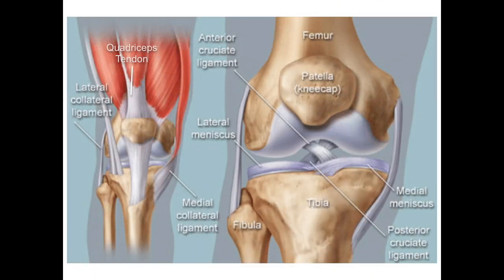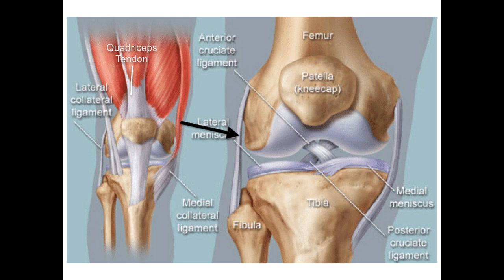So far we focused on connective tissue proper, and in this picture of the human knee we see a few examples. We see the tendons which connect the muscle to the bone, and the ligaments which connect the bone to bone. Both of these are dense regular connective tissue.